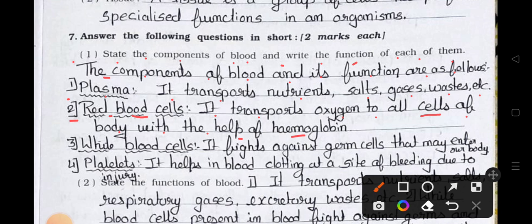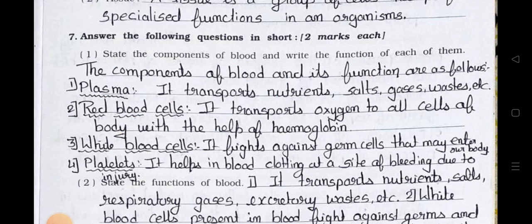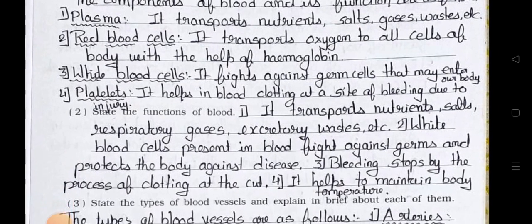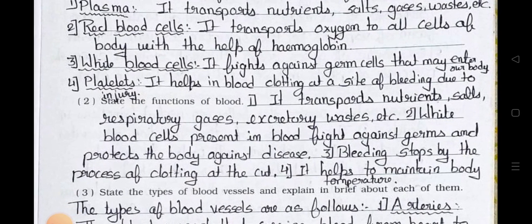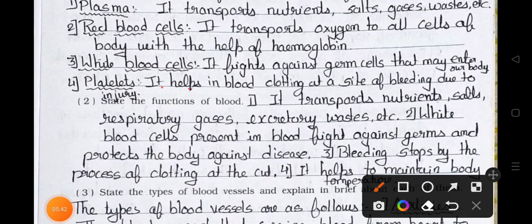Number 3 — White blood cells: It fights against germ cells that may enter our body. Number 4 — Platelets: It helps in blood clotting at the site of bleeding due to injury.